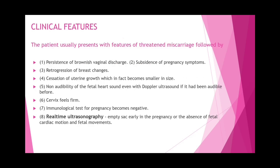Clinical features: the patient presents with features of threatened miscarriage followed by persistence of brownish vaginal discharge, subsidence of pregnancy symptoms, retrogression of breast changes, the uterus becomes small in size, non-audibility of fetal heart sounds even on Doppler (if previously audible), cervix feels firm. Immunological test for pregnancy becomes negative. On ultrasonography, there is an empty sac and absence of fetal cardiac motion and fetal movement.